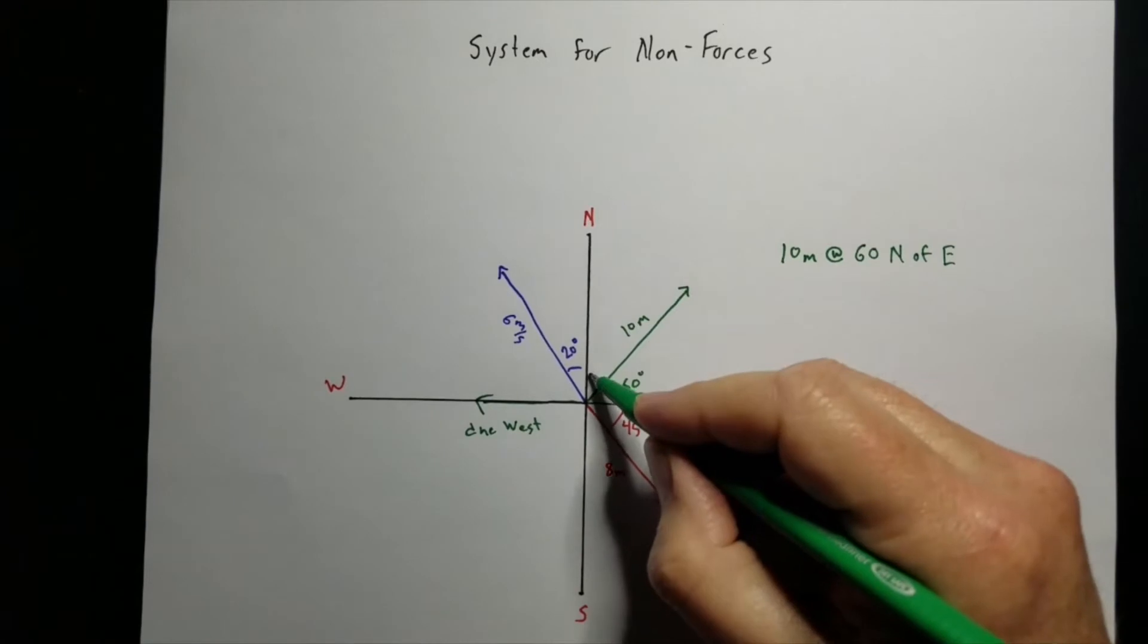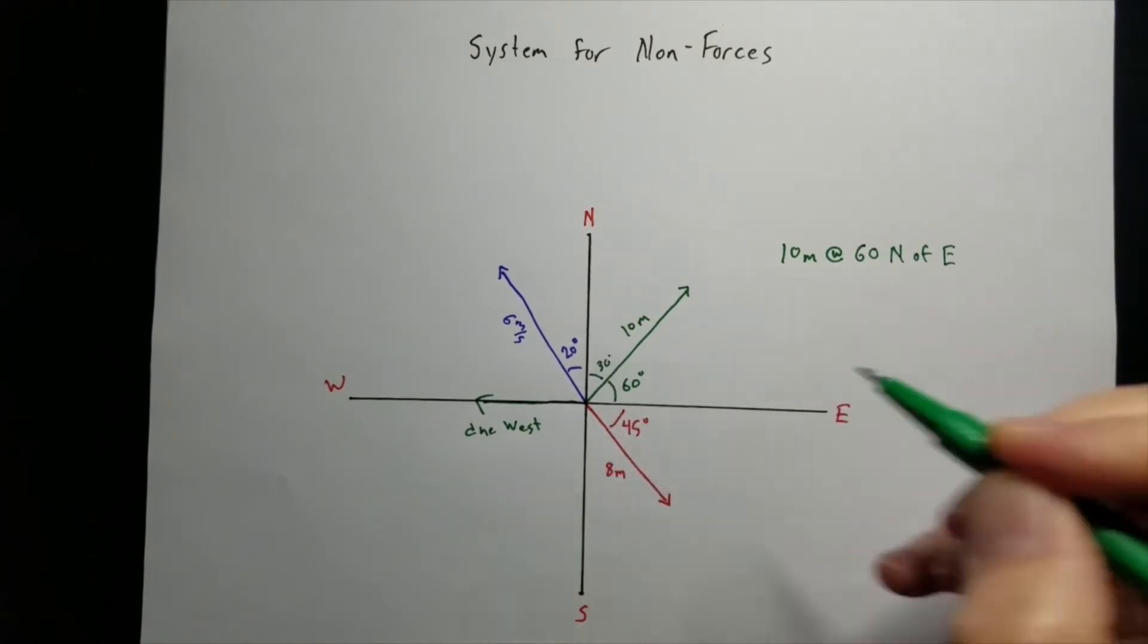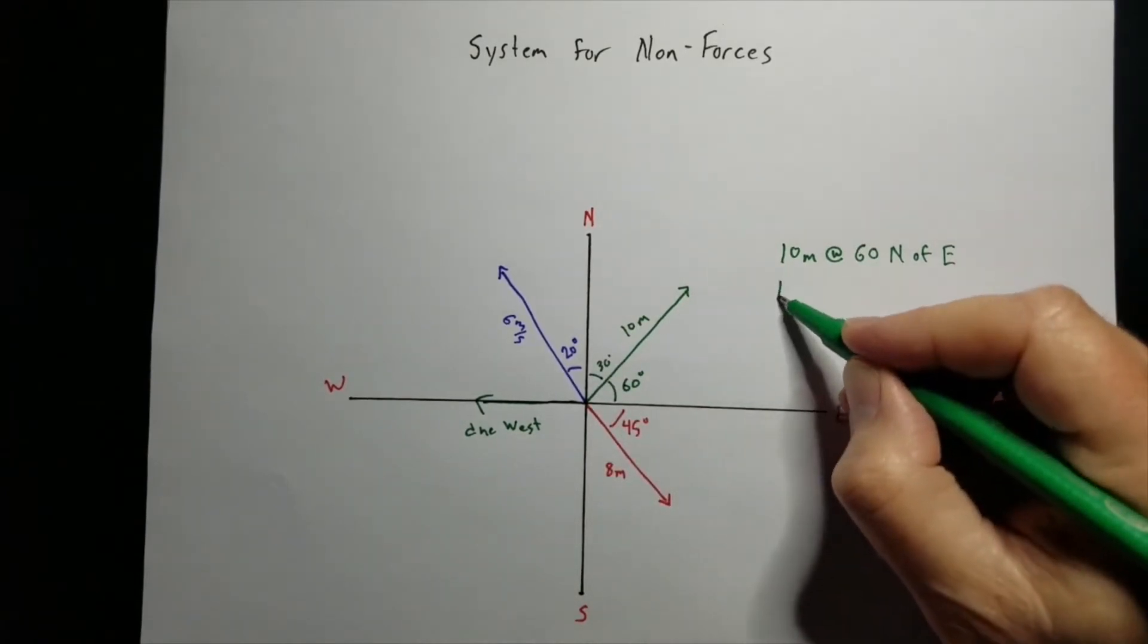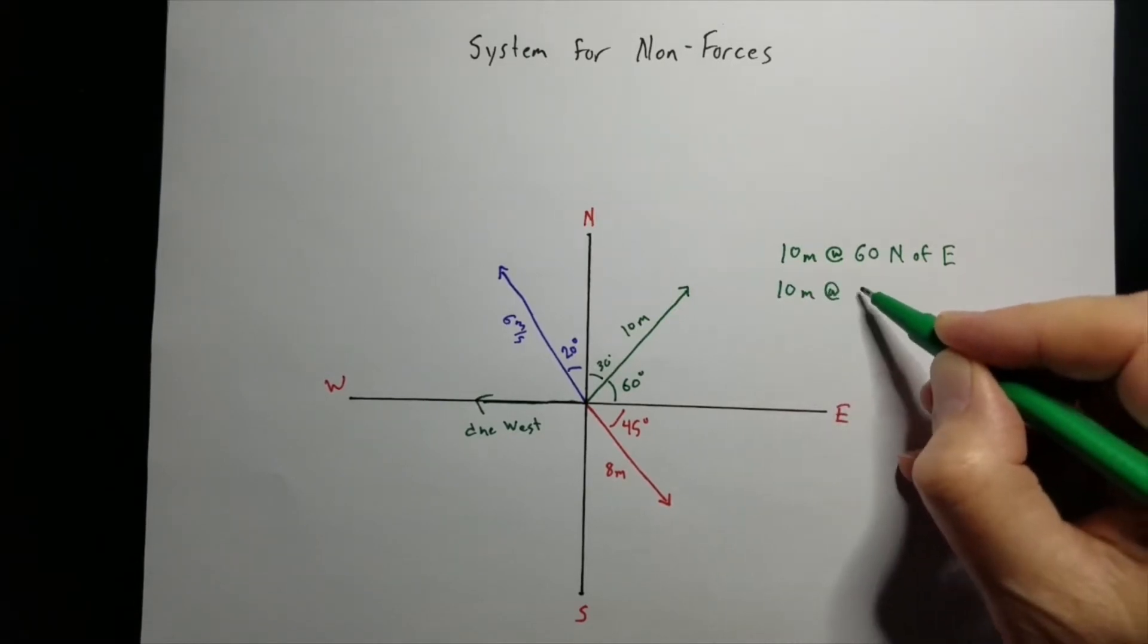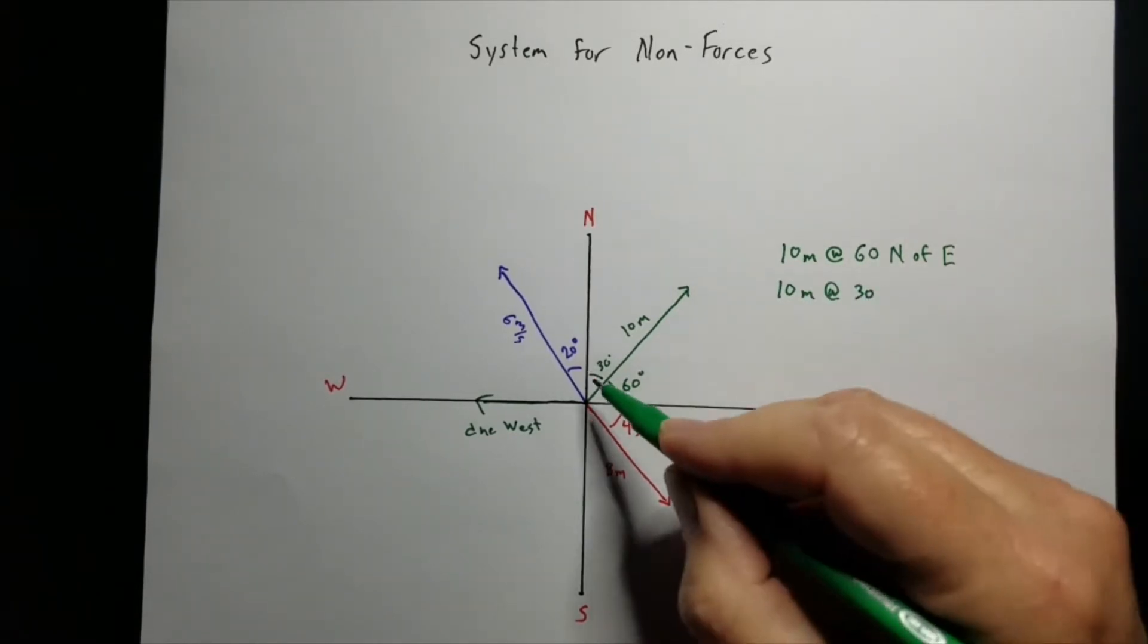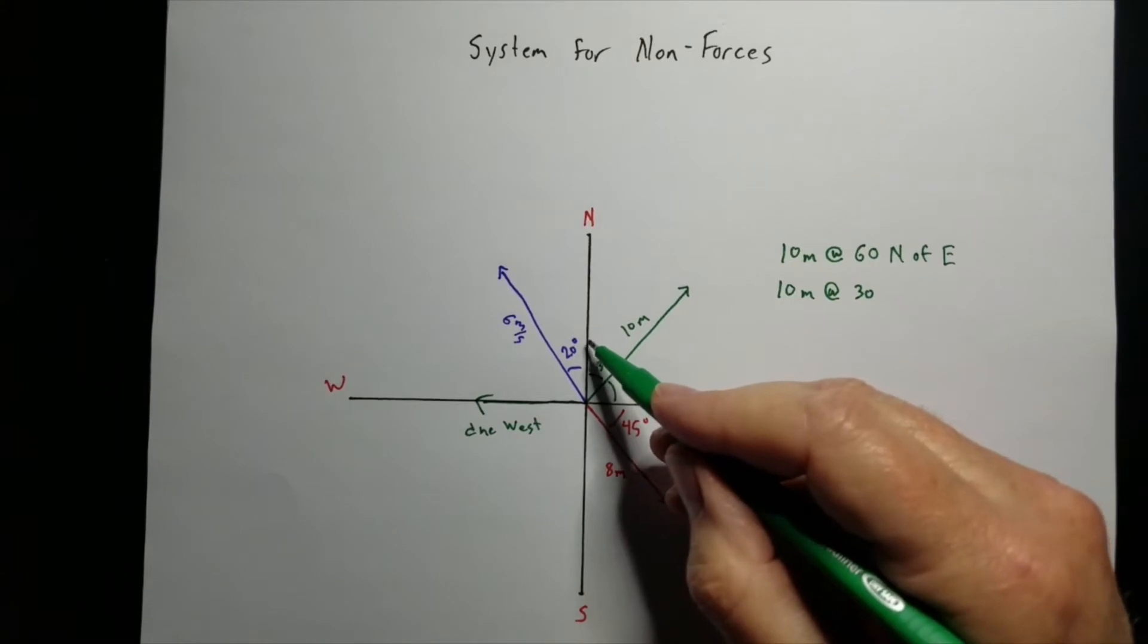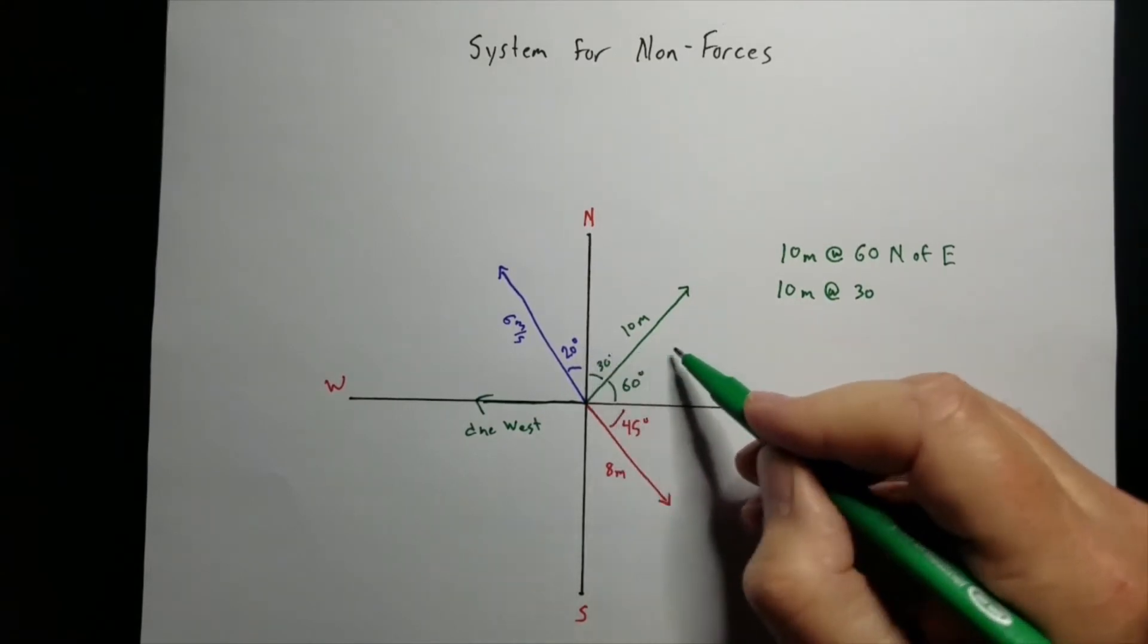Well, if that's 60 degrees, that means this angle's got to be 30 degrees. So another way we can name this vector is 10 meters at 30 degrees. Now with that angle, we're going from the north towards the east.